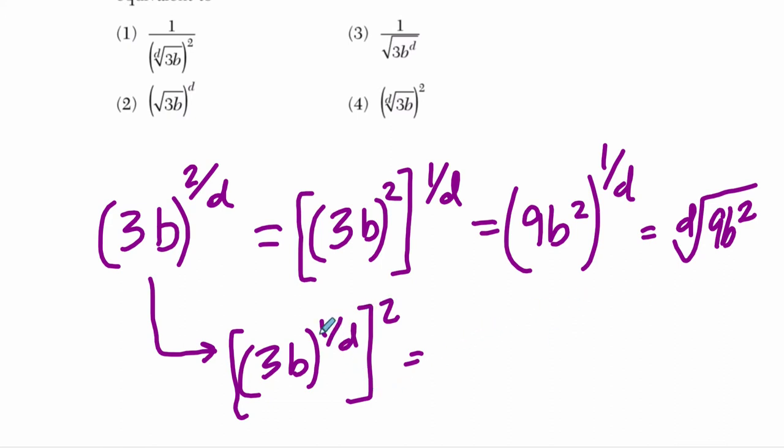What do I do here? Well, I can distribute 1 over d to both 3 and b, and I'm essentially taking the dth root of 3b. And then we still need to square it, which is exactly what you see in choice 4.